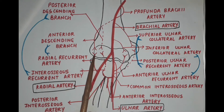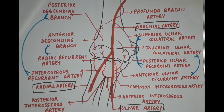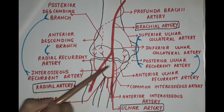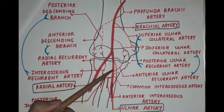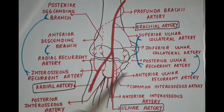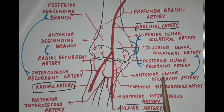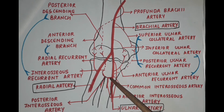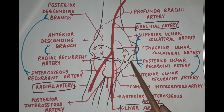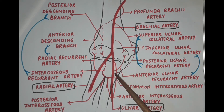The radial artery gives off a branch named the radial recurrent artery. The ulnar artery, after traveling a short distance, gives off two branches: the anterior ulnar recurrent artery and the posterior ulnar recurrent artery.